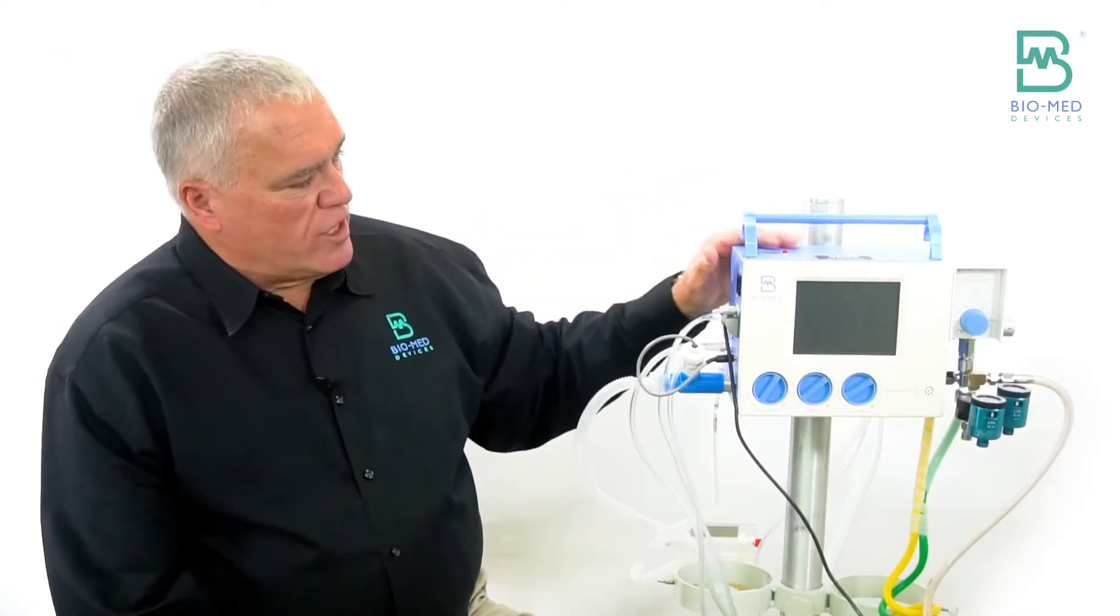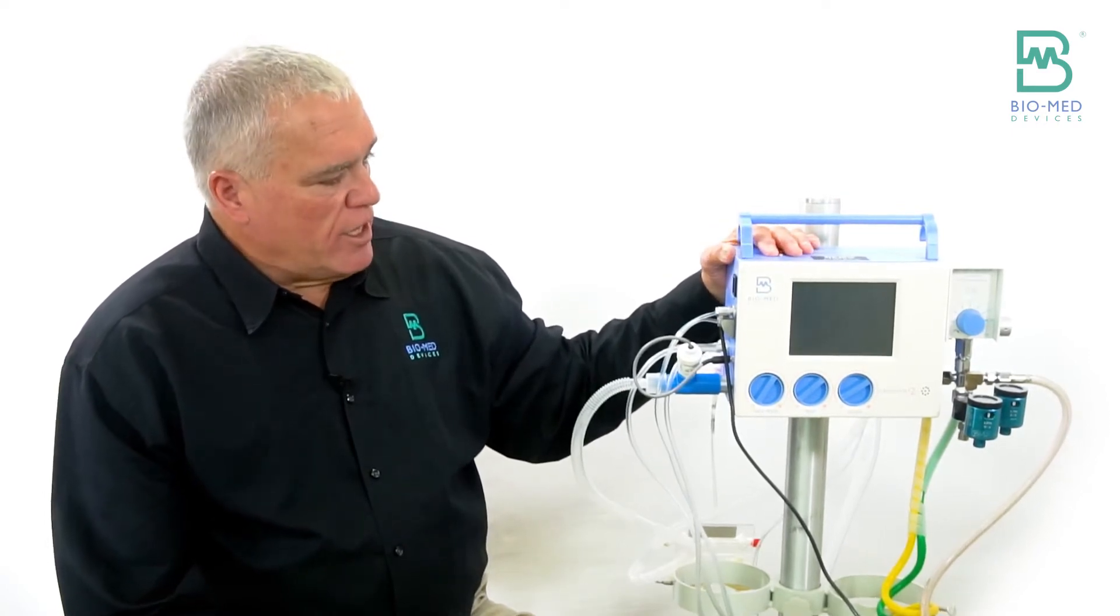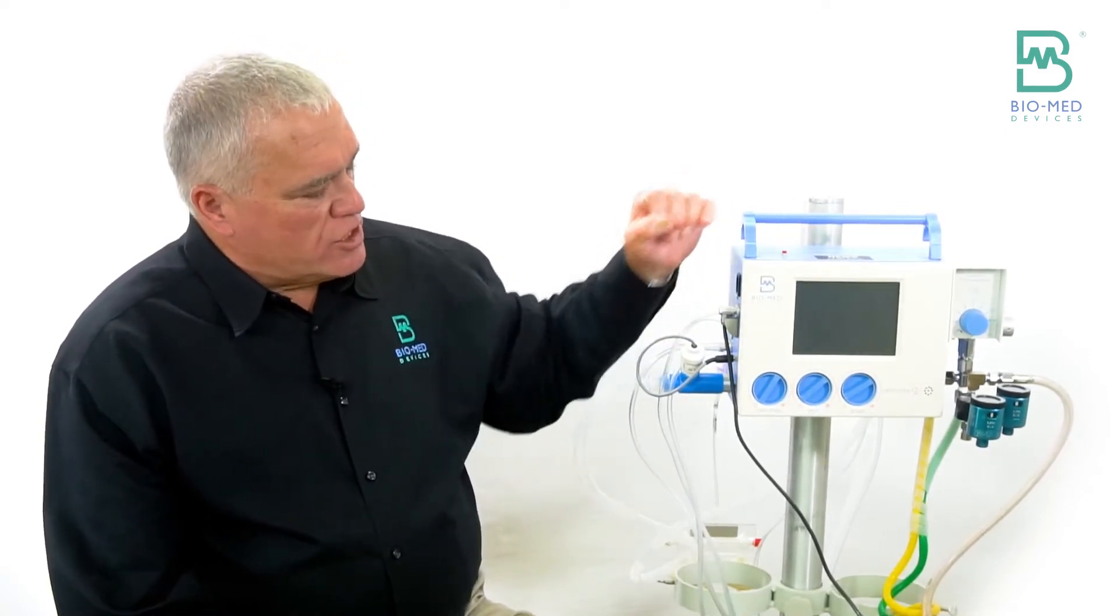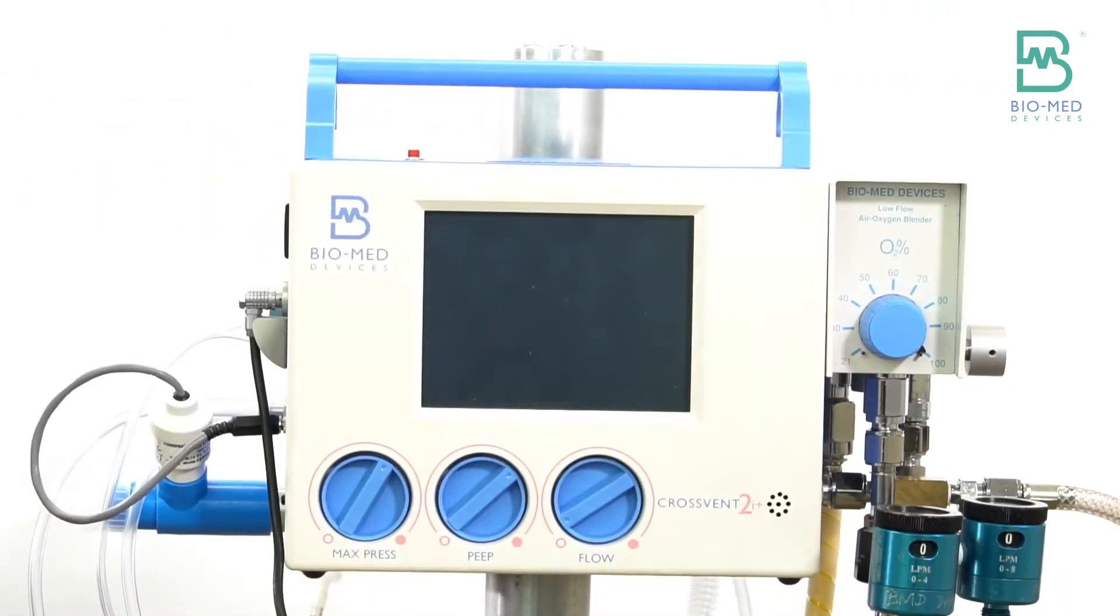People will use this in conjunction with the Bunnell high-frequency jet ventilator. As such, it can be mounted on the same pole. It's got a built-on blender. We added the flow meters, coiled hoses.